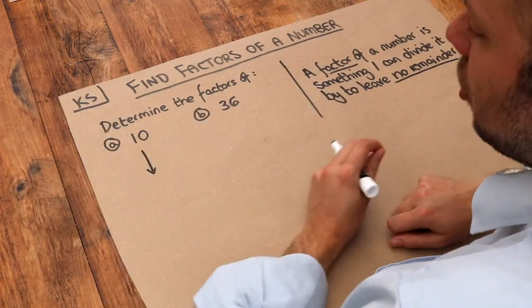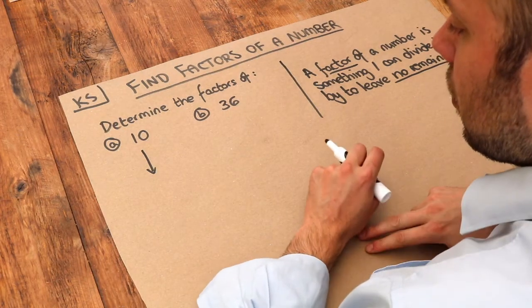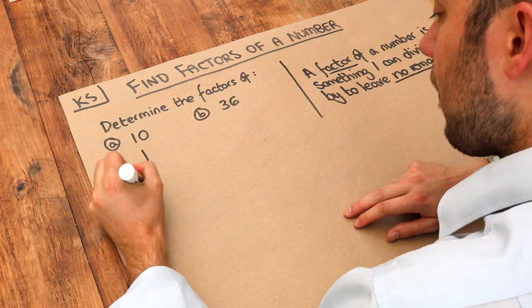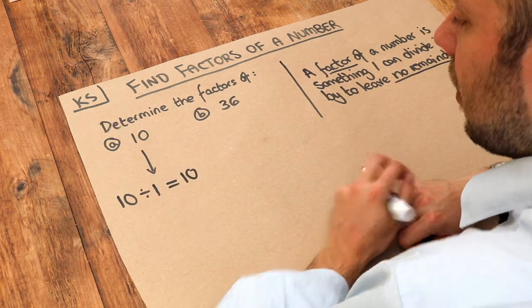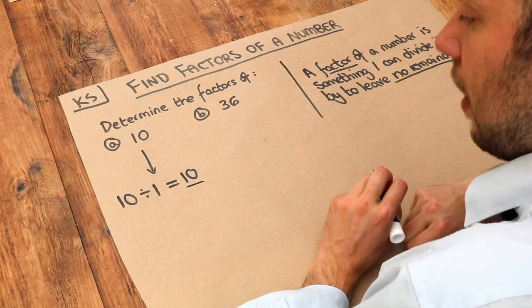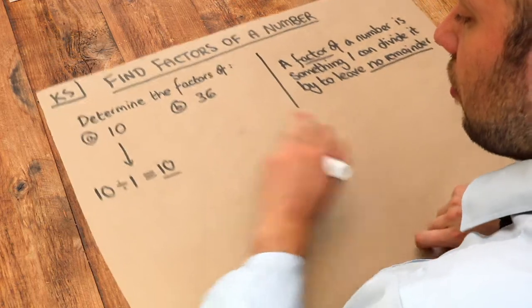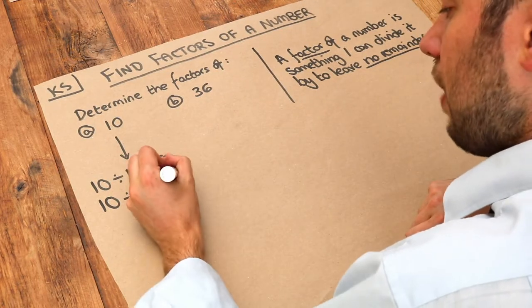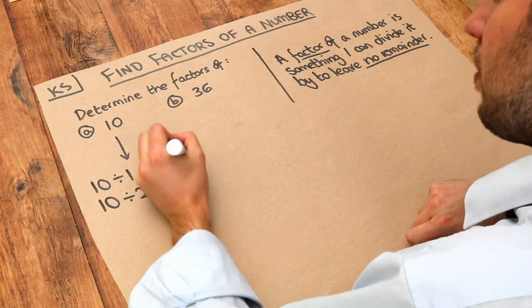What numbers could you divide 10 by to leave no remainder? If I divided 10 by 1, that would give you 10 with no remainder, so 10 is a factor of 10. Can we divide 10 by 2? Yes, we can. We get 5, and there's no remainder, so 5 is also a factor.